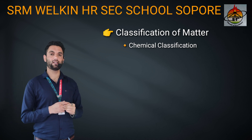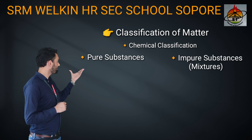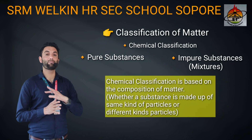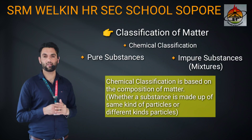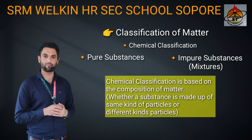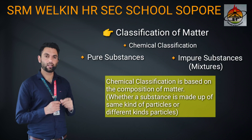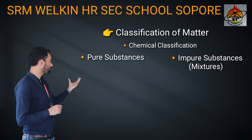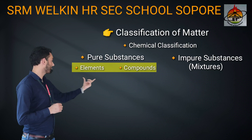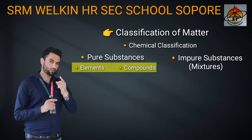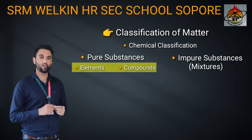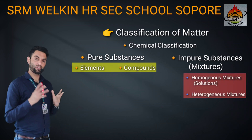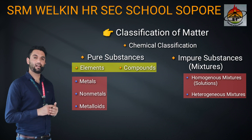In chemical classification of matter, matter is classified as pure substances and impure substances. The chemical classification is done on the basis of the composition of matter — what is this matter made of, is it made of the same type of particles or different types of particles? Pure substances are further divided into two main categories: elements and compounds. Impure substances are also known as mixtures and are classified as homogeneous and heterogeneous mixtures. Elements are further divided into three main categories: metals, non-metals, and metalloids.